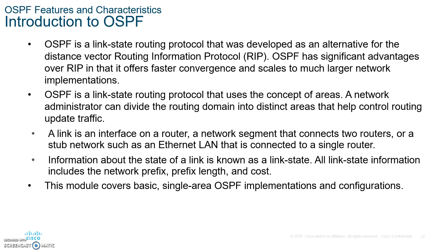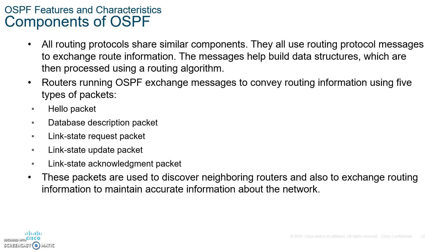OSPF is an open source protocol with an administrative distance of 110. Remember, the administrative distance is how trustworthy the path is. It also has unlimited hop count — each hop is a router you pass through. By comparison, EIGRP is limited to 100 hops and RIP is only 15 hops. OSPF supports VLSM and uses areas to control routing updates, such as area zero and area one. Area zero is the backbone and is required.